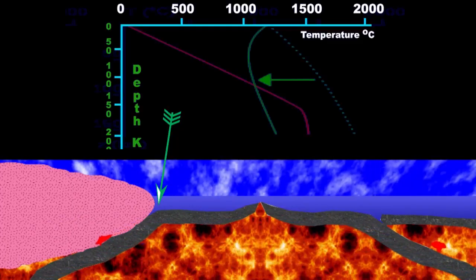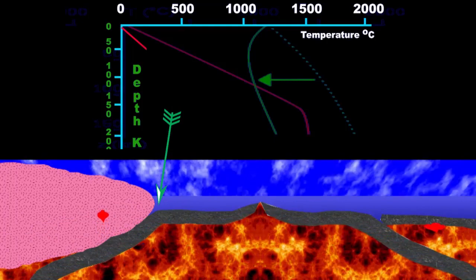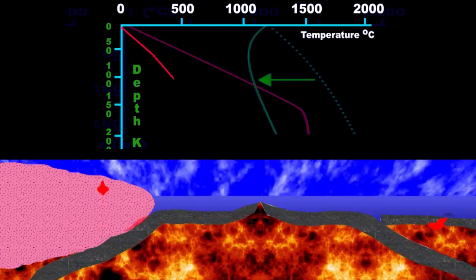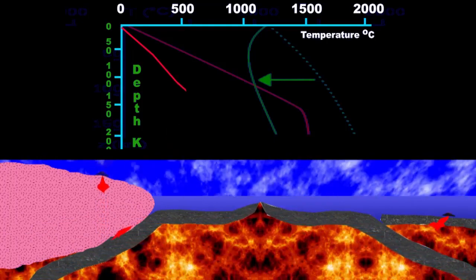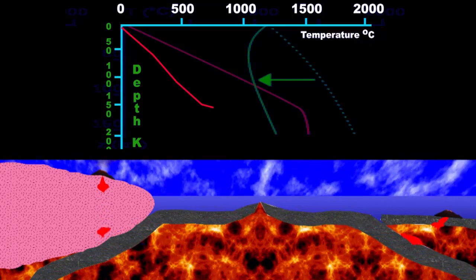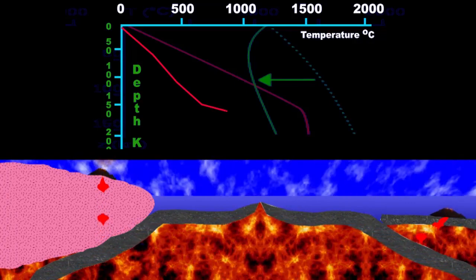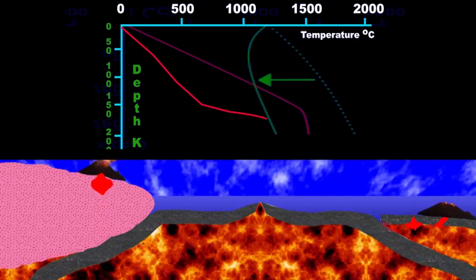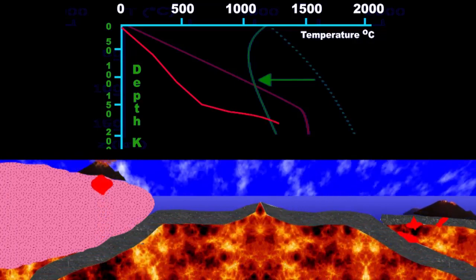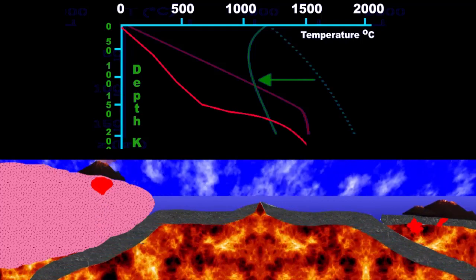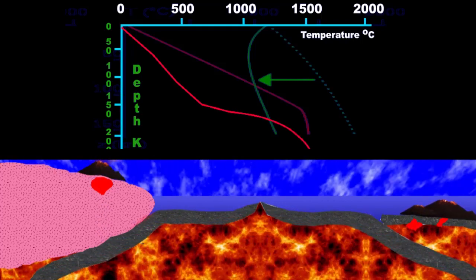These subduction zones have one of the shallowest geothermal gradients, and it can cross the solidus of the lighter minerals going down to produce magma. Meanwhile, the pressure still builds up significantly with depth.